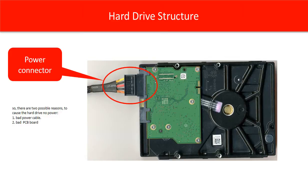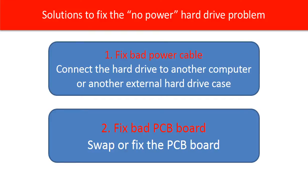There are two possible reasons to cause the hard drive to have no power. First, a bad power cable. Second, a bad PCB board. Solutions to fix the no-power problem: connect the hard drive to another computer or to another external hard drive case to fix the bad power cable problem. To fix a bad PCB board problem, we can swap or fix the PCB board.